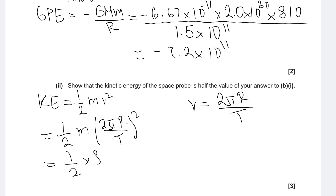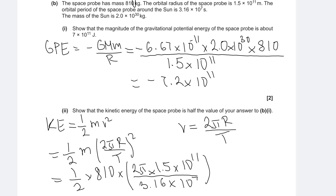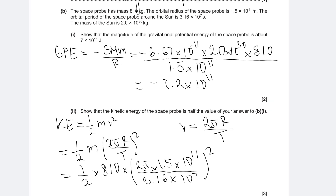This gives ½ times the mass (810 kg) multiplied by 2π times the orbital radius (1.5×10¹¹) divided by the orbital period, which is conveniently given in seconds as 3.16×10⁷, all squared. Remember to be careful not to forget the square. Putting this into a calculator gives around 3.6×10¹¹ joules.